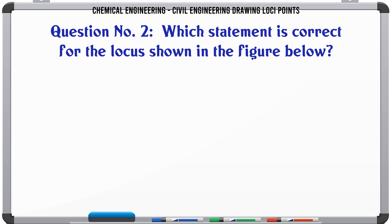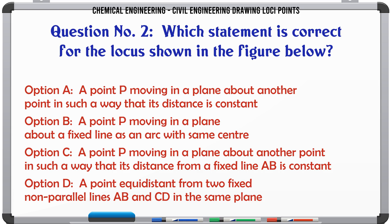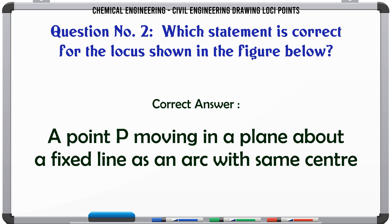Which statement is correct for the locus shown in the figure? a) A point P moving in a plane about another point such that its distance is constant. b) A point P moving in a plane about a fixed line as an arc with same center. c) A point P moving such that its distance from fixed line AB is constant. d) A point equidistant from two fixed non-parallel lines AB and CD. The correct answer is: a point P moving in a plane about a fixed line as an arc with same center.